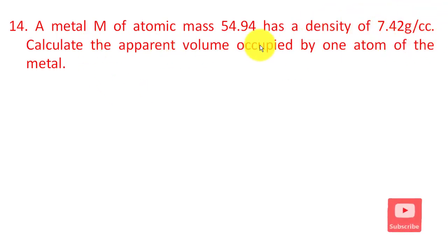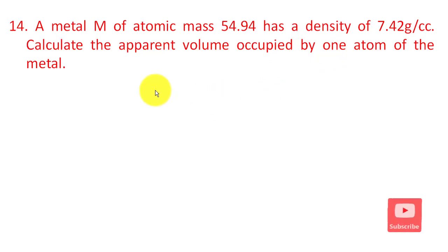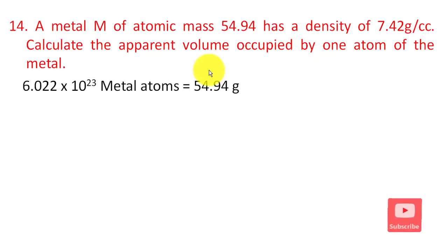The next question is about the apparent volume occupied by one atom of a metal. The volume of the atom can be found using the formula: for one mole of the metal, there are 6.022 × 10²³ atoms.